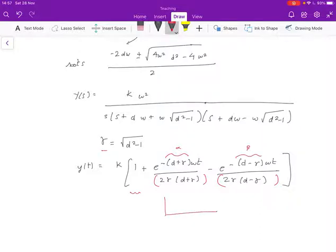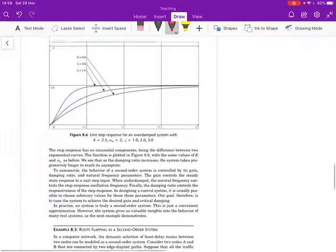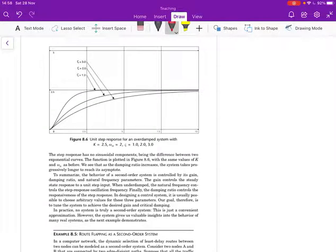So if you think about it, one looks like this, e to the minus alpha t, or if you want, a e to the minus alpha t, and the other one is sort of b e to the minus beta t. And so the gap between them also is exponential, and we're adding all of that to 1.